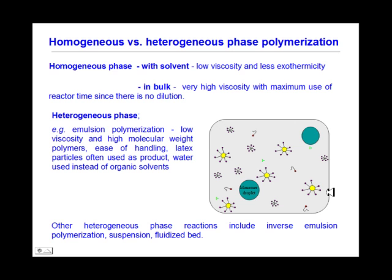Another type of reaction is heterogeneous phase polymerization. In contrast to the homogeneous phase, which is done in solvent or in bulk, the heterogeneous phase includes either oil-in-water or water-in-oil phase reactions of different types of dispersion and suspension. An example shown in the figure to the right is emulsion polymerization, which allows high molecular weight polymers to be obtained with low viscosity.